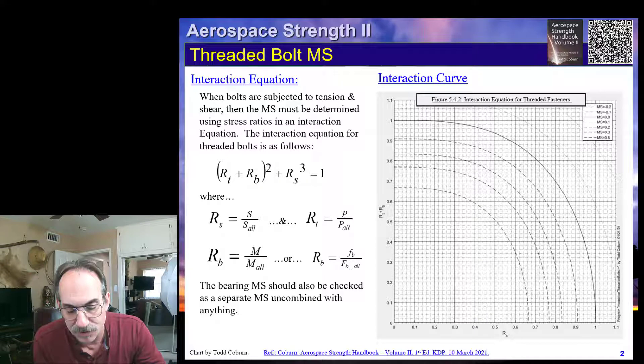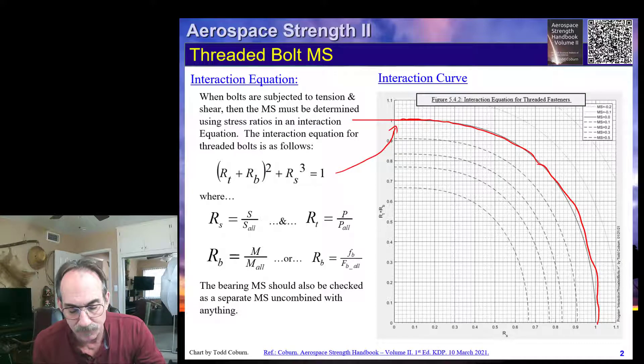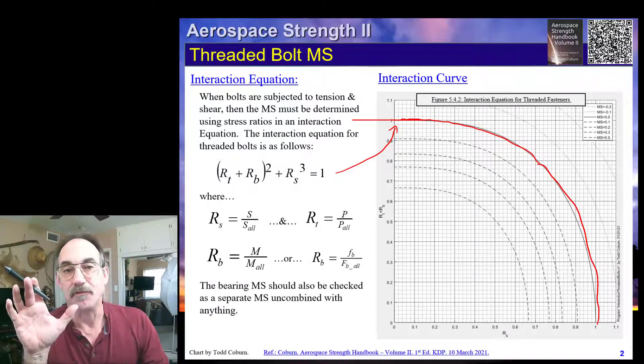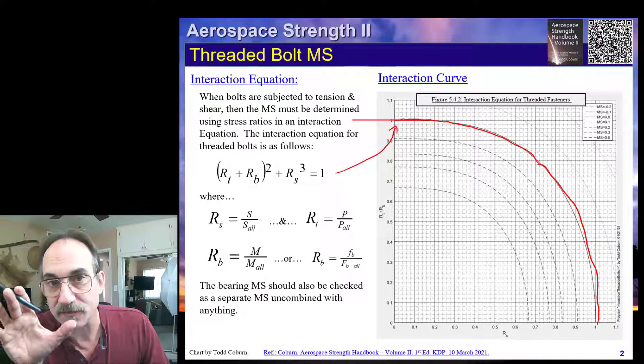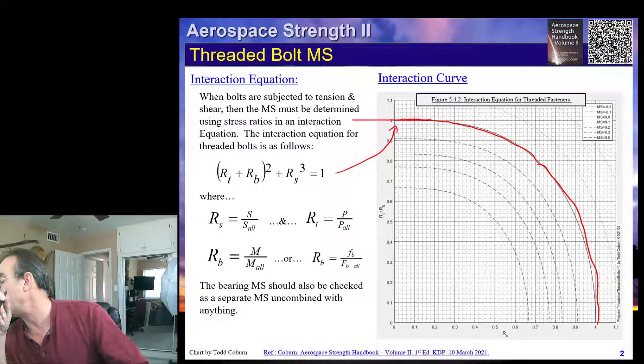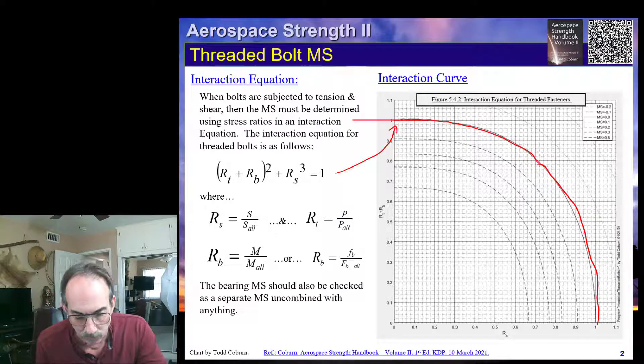The way this works is, now to focus on this, this is the zero margin of safety line. This is the curve. This is the plot of this interaction curve. And what we're going to do is calculate our margin of safety in the normal way. If you forget how to calculate the margin of safety for interaction curves, go back to your 3261 handbook, section 12.6, and that defines it. But basically what we're going to do, we're going to take our, let's say we have RS, and we have a RT plus RB.